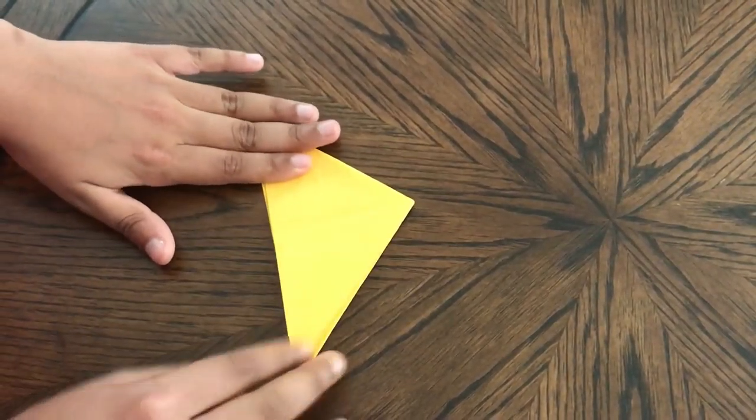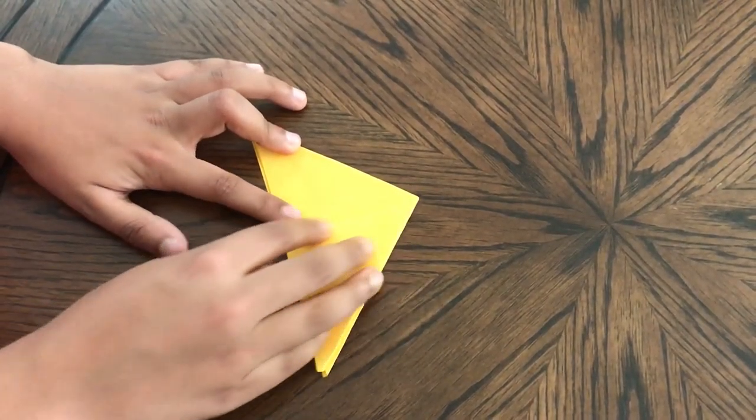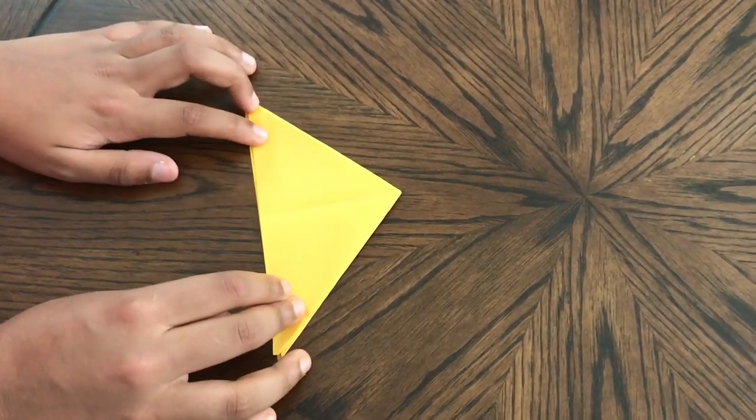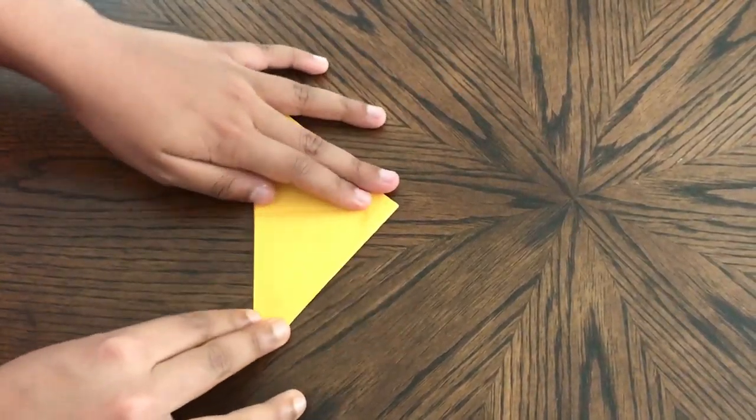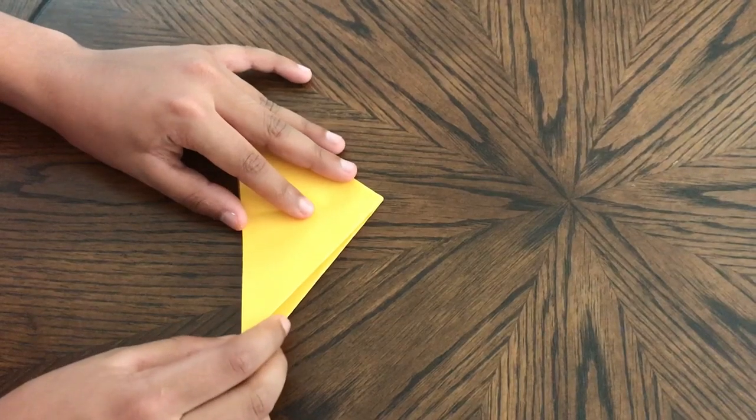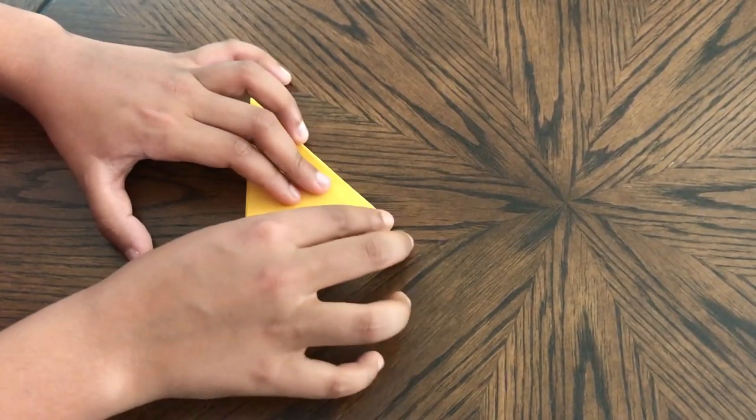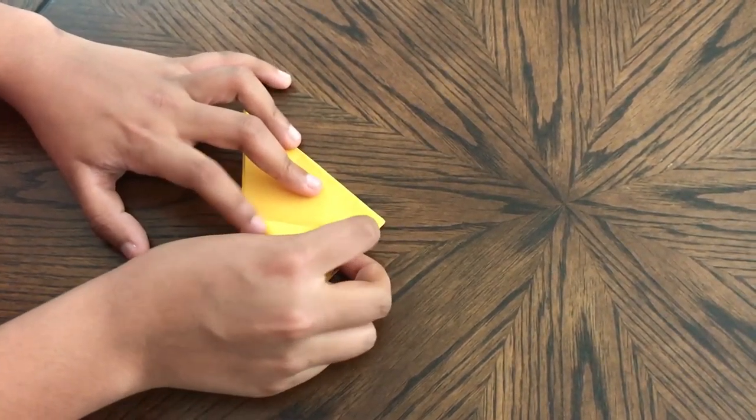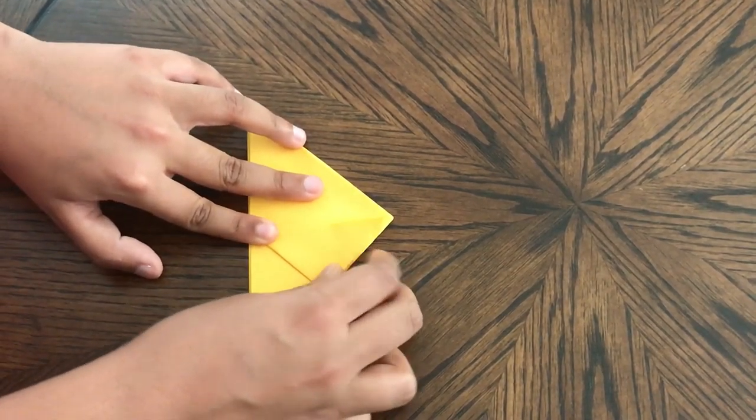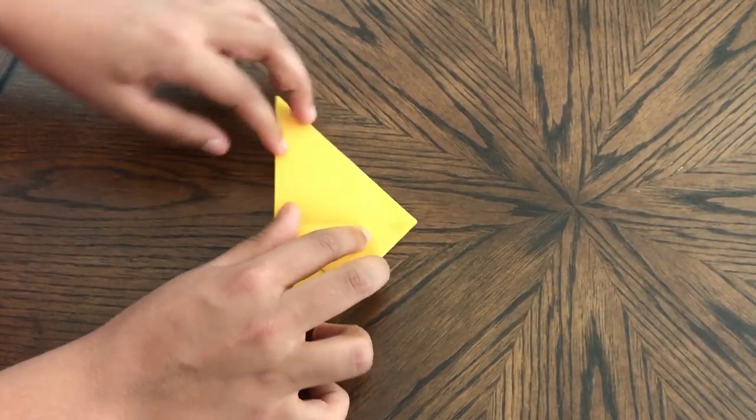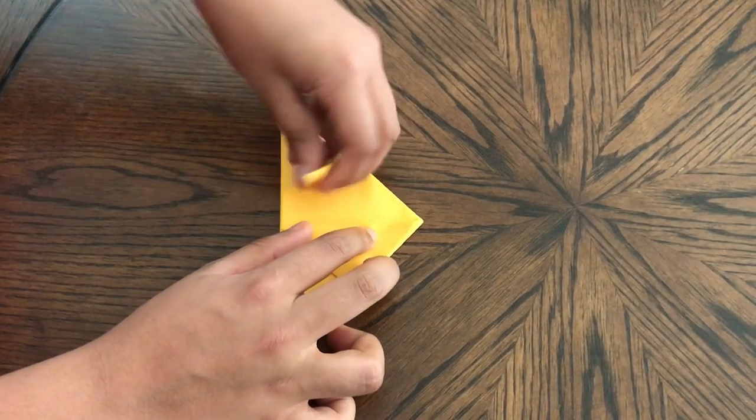And you will have an extra crease right here down the middle. Now what you're going to do is fold this edge to line up with that crease, and then do the same thing on this side.